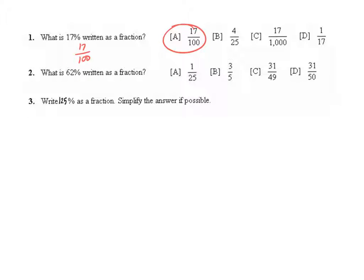Question 2, 62% means 62 out of 100. This is not in simplest form because 62 and 100 share a common factor of 2. We can then pull that out, and it becomes 31 over 50, which is choice D.